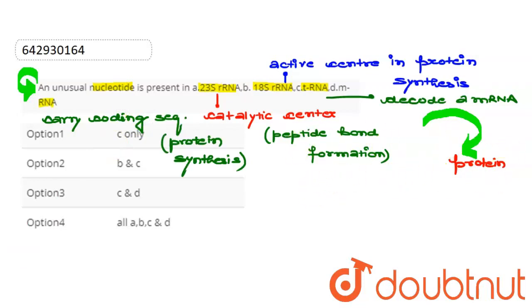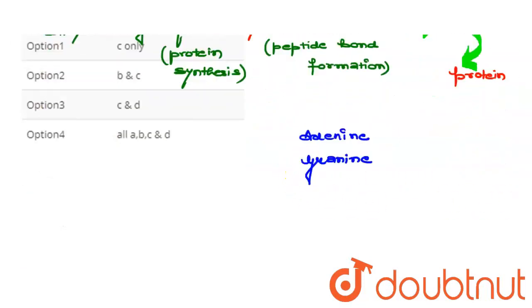Now here, the RNAs basically, the nucleotides that come in them, are adenine, guanine, then cytosine, and then we have uracil.